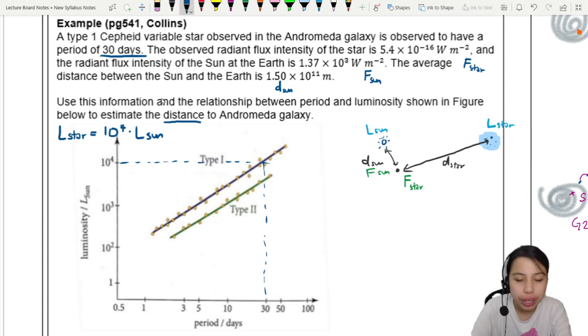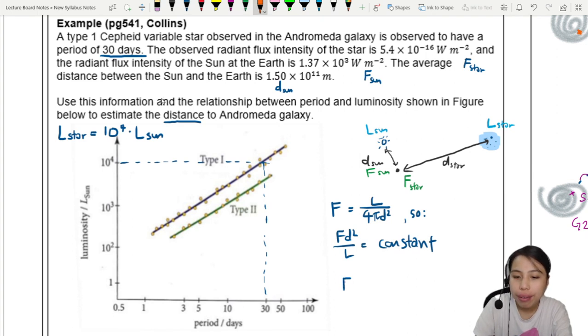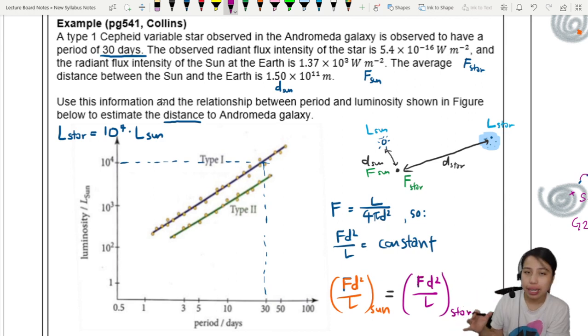Now let's look at our ratio. We know that F equals L over 4π d squared. We can rearrange this to a relationship where F times d squared over L is a constant. Which means if I have F, d squared, and L for my sun, that ratio would be the same as F d squared over L for the star, the Cepheid star in the Andromeda galaxy. All I need to do is plug all my values into this ratio and I can get my distance.